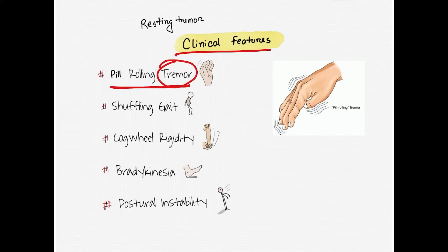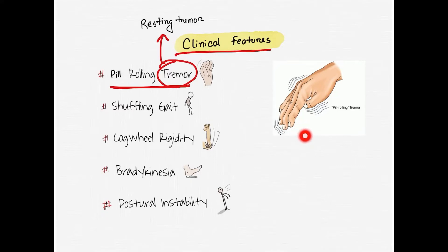An important clinical feature is resting tremor. Resting tremor means when the hands are at rest — for example, when resting on the lap or by the side of the body — there is a tremor. But when the person performs an action, such as picking up a glass or raising the hand, the tremor stops and the movement is done normally. This is a very important clinical observation.